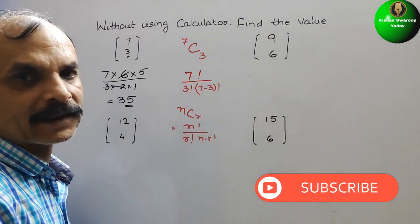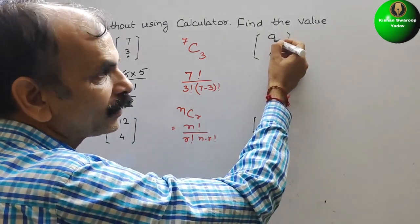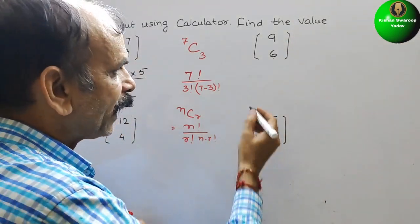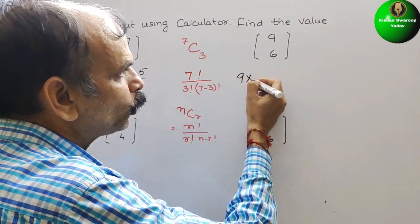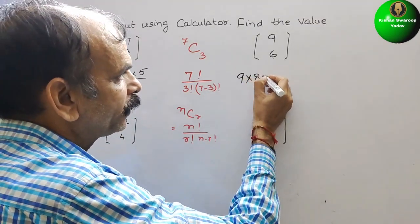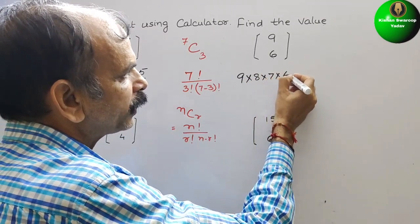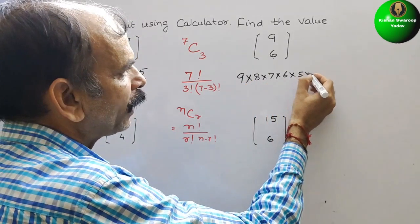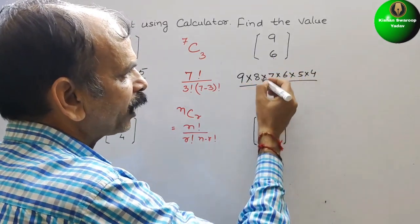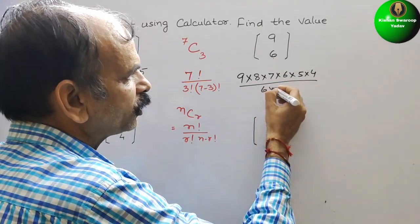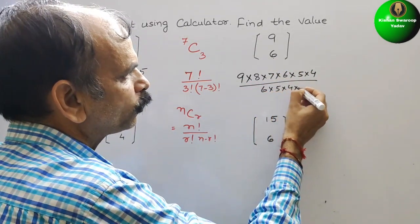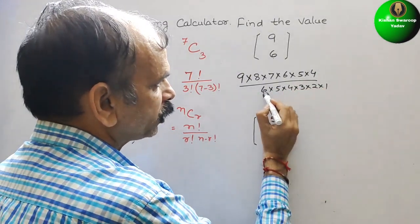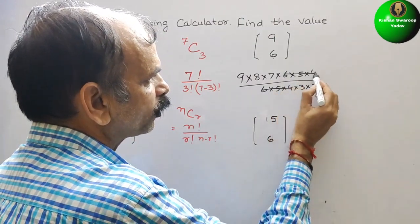Comes here, 9 and 6. So that means 9 factorial, how much we have to write? Up to the 6th digit. That means 9 into next is your 8 into 7 into 6 into 5 and this is and 4. By 6 factorial that is your 6 into 5 into 4 into 3 into 2 into 1. So now, 6, 5 and 4 here, 6, 5, 4 gone.